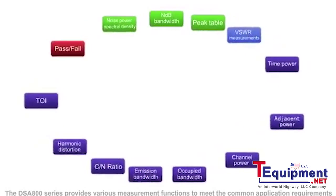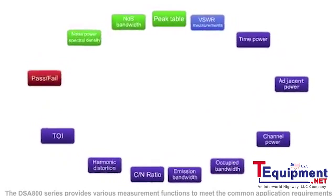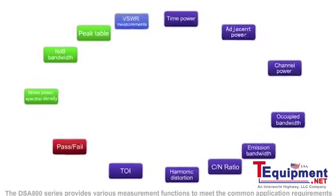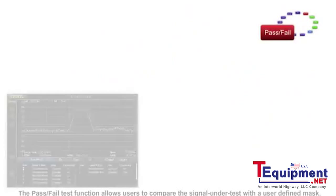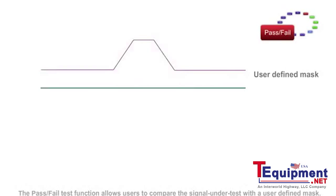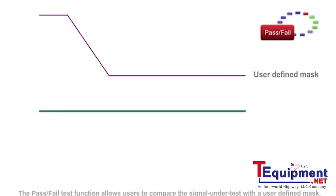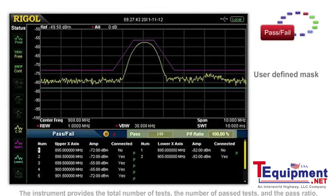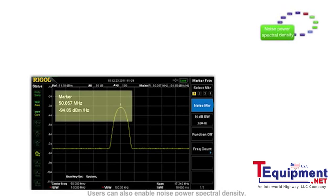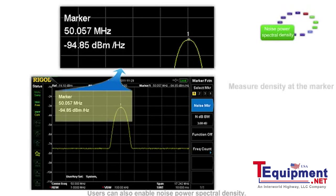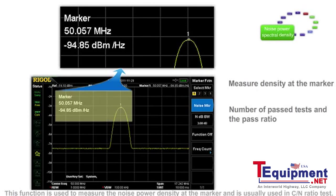The DSA 800 series provides various measurement functions to meet common application requirements in spectrum analysis. The pass-fail test function allows users to compare the signal under test with a user-defined mask. The instrument provides the total number of tests, the number of pass tests, and the pass ratio. Users can also enable noise power spectral density, which is used to measure the noise power at the marker and is usually used in C to N ratio tests.